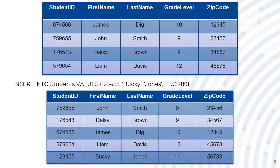The columns are: student ID, first name, last name, grade level, and zip code. If the school entered Jones then Bucky, the database would have taken Jones as the first name. So here Bucky Jones is correctly added to the table with values in the right order.